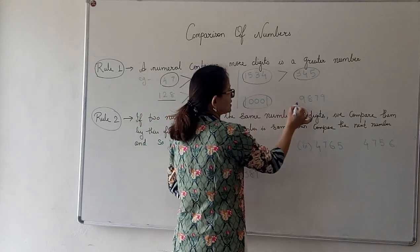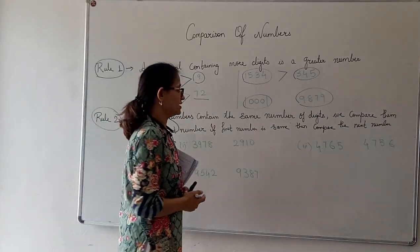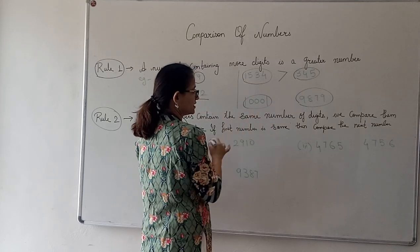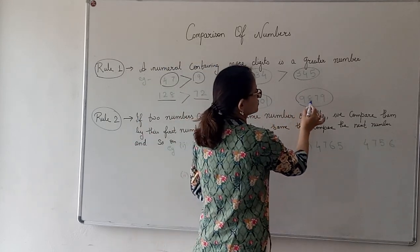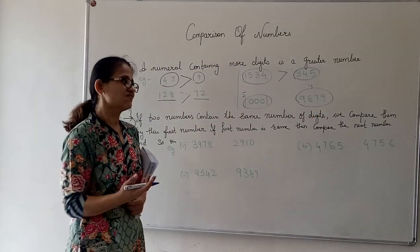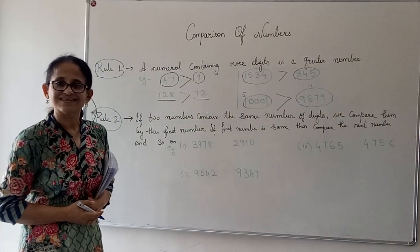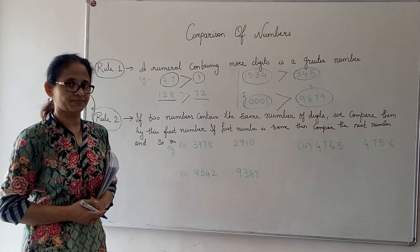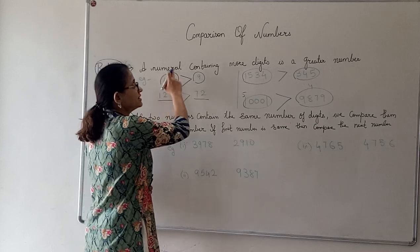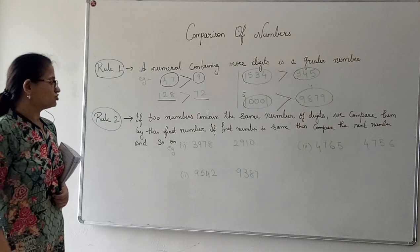Next example: 10,001 has 5 digits and 9,879 has 4 digits. So which one is bigger? Definitely the number which has more digits is bigger, and the number which has fewer digits is smaller. This was rule number one: a numeral containing more digits is a greater number.